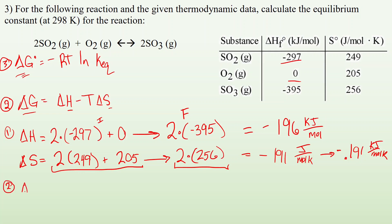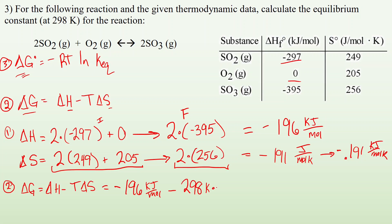Step two: delta G equals delta H minus T times delta S. Plugging in: delta H is negative 196 kilojoules per mole, minus temperature 298 K, times delta S of negative 0.191 kilojoules per mole kelvin. When I plug and chug in the calculator, I end up with a delta G of negative 139 kilojoules per mole.